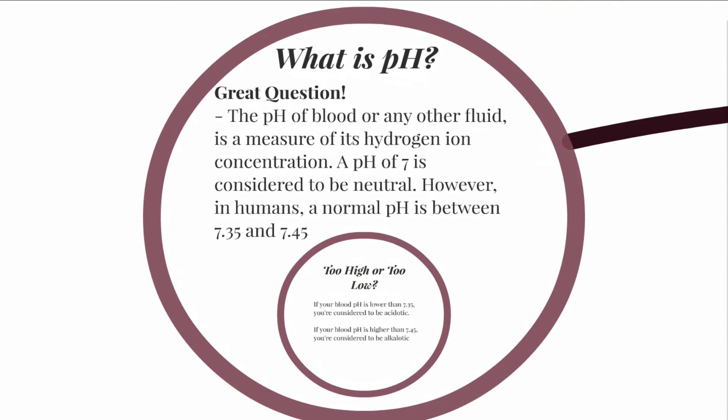So what is pH? The pH of blood or any other fluid is a measure of its hydrogen ion concentration. A pH of seven is considered to be neutral when we're talking about fluids in general. However, when we're talking about humans, blood pH is supposed to be between 7.35 and 7.45. That's what we would call a normal pH.